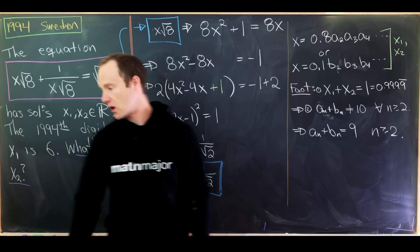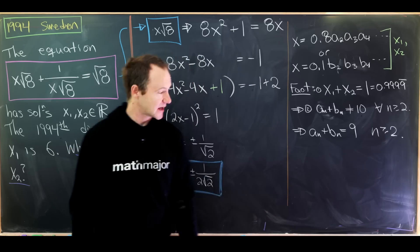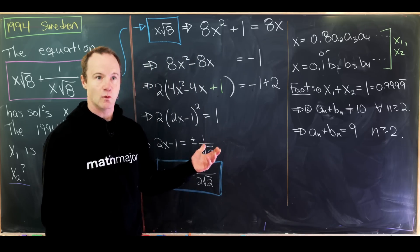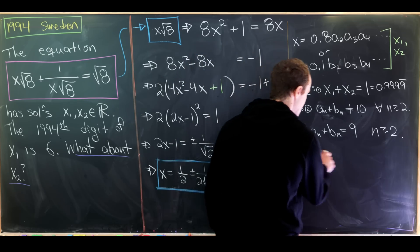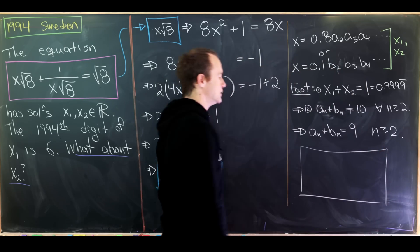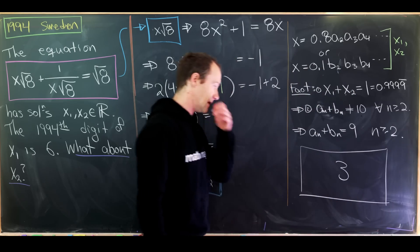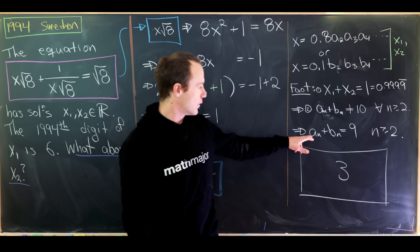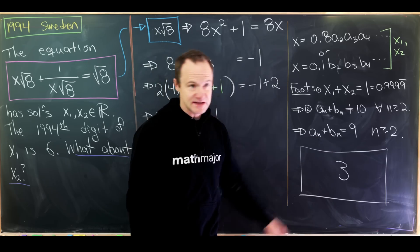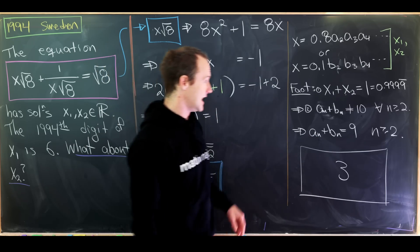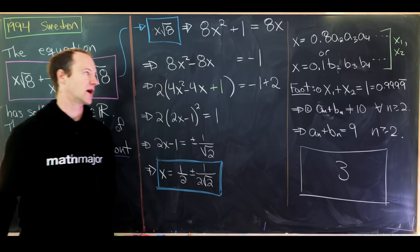But now we know that the 1,994th digit of x1 is 6. So that means the 1,994th digit of x2 must add to 6 to achieve 9. So that means our final answer is 3. And one thing that we don't know is whether or not that's a sub 1,994 or b sub 1,994, because again we don't actually know which one of these is x1 or x2.